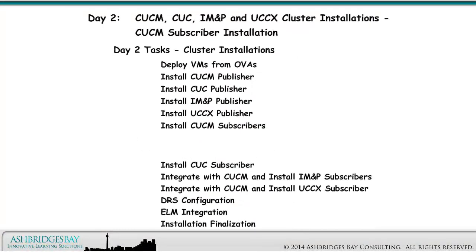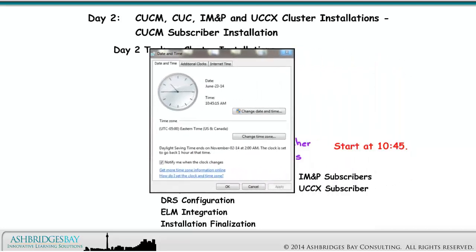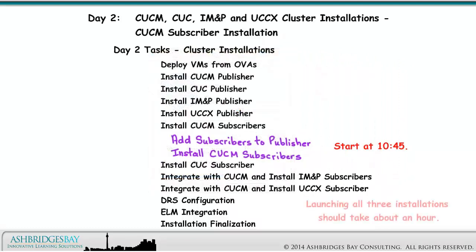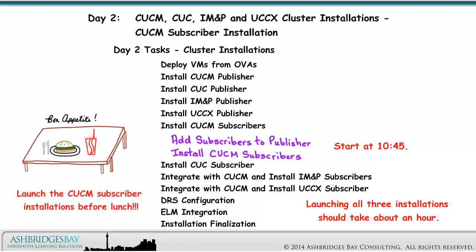The CUCM publisher installation should have completed. The CUCM VMs are deployed from OVAs and the installation media is attached to the VMs. We can proceed to add the subscribers to the publisher and install the CUCM subscribers. We started these installs at 10:45. Launching all three installations should take about an hour. Launch the CUCM subscriber installations before lunch so you don't have to wait on them for the UCCX integration and subscriber installation.